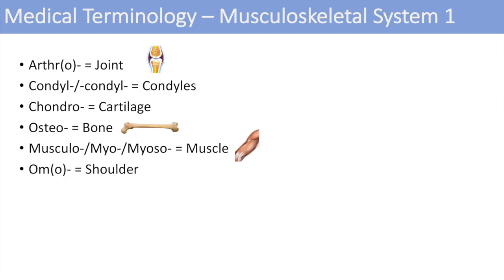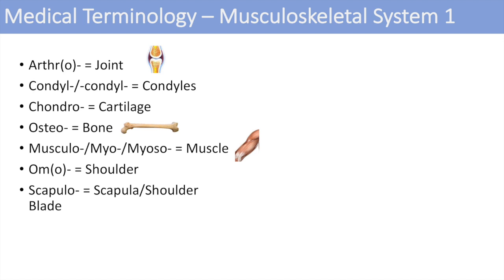The next one is omo, which means shoulder. You might not have heard of this one — you might hear muscles like the omohyoid, which is associated with the shoulder. The next one is scapulo, which just means scapula or shoulder blade, so that's a pretty easy one to remember.